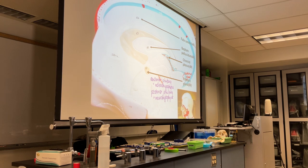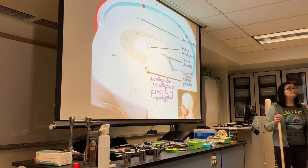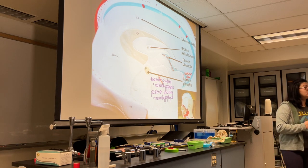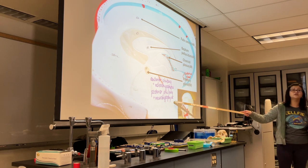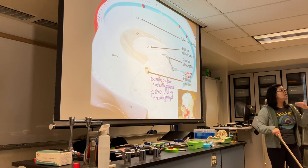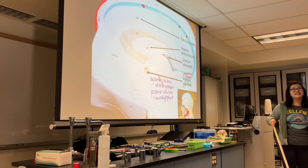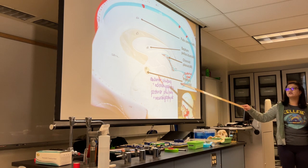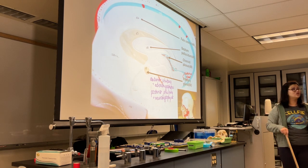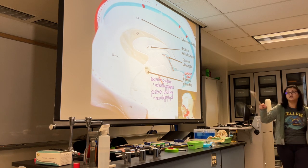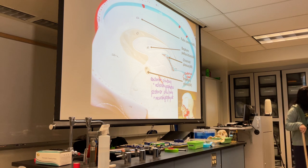It's like the relationship between the liver and the gallbladder — the liver makes bile, but it's stored and concentrated in the gallbladder. Similarly, the hypothalamus makes hormones like ADH, which is then sent to the posterior pituitary for storage and concentration. When conditions are right, the hypothalamus tells the posterior pituitary to release them.